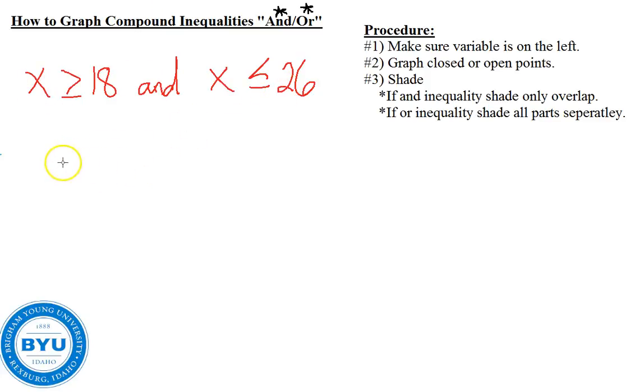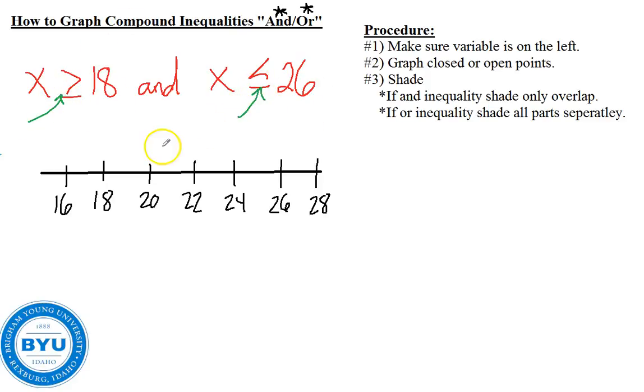If we were to graph this, we would need to make sure that the X's are on the left of the inequalities and they are. We then draw a number line and I'm going to make sure that all of these are here. So 18, 20, 22, 24, 26. This would be 28 and down here would be 16. We then need to decide if we're going to use open dots or closed dots. When it's equal to, we use closed points. So I'm going to put a closed point at 18 and also a closed point at 26.